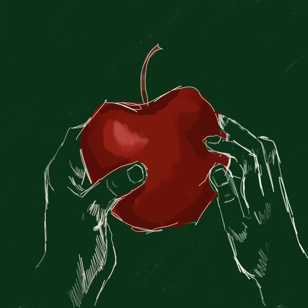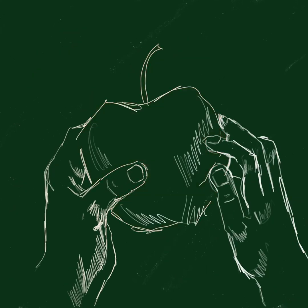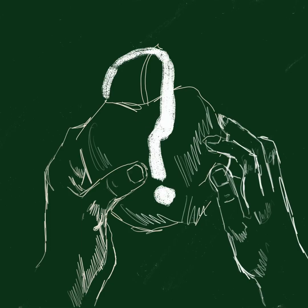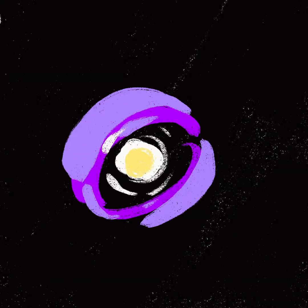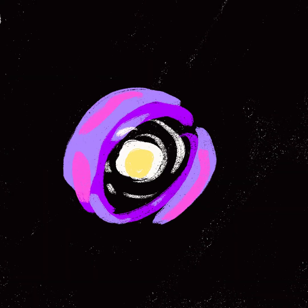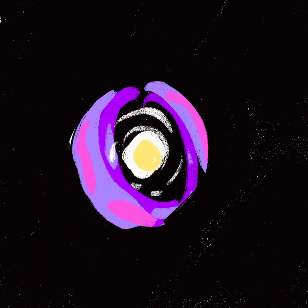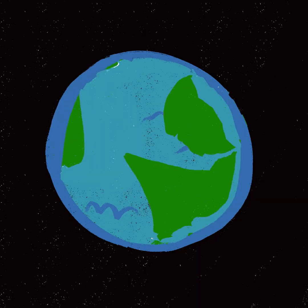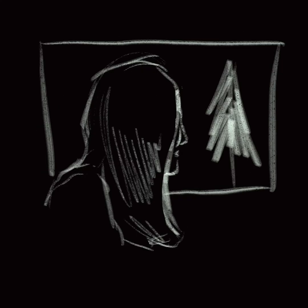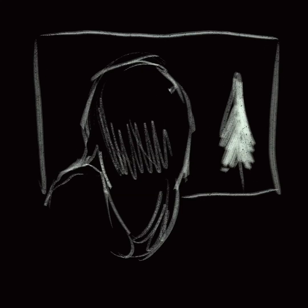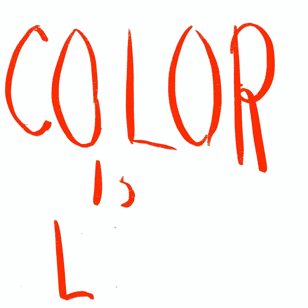That apple looks red, right? But what if I told you that apple has no color? Everything you ever thought of has no color — the galaxy, earth, and the trees outside your window right now. It's your brain's generated illusion. In other words, color is a lie.